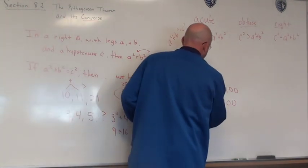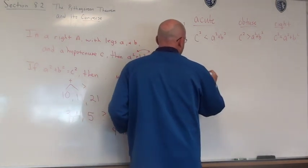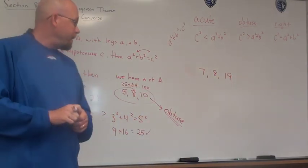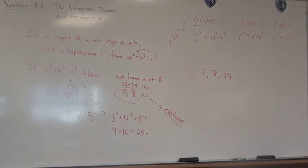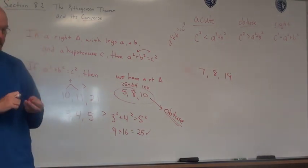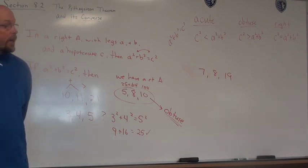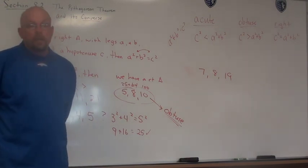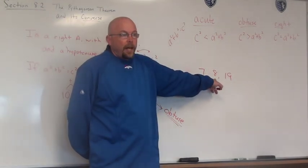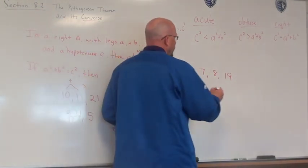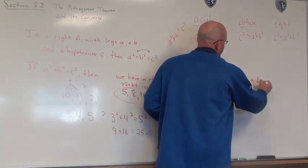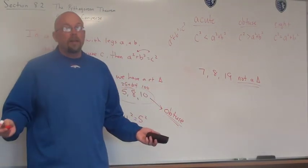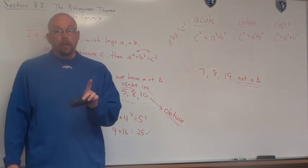Let's try 7, 8, 19. What kind of triangle is it? This one's not acute, not obtuse, not right — because 7 plus 8 is 15, and 15 is not greater than 19. Trick question: this one's not even a triangle. So if you run into a problem today asking what kind of triangle it is, first check to see that it actually is a triangle.